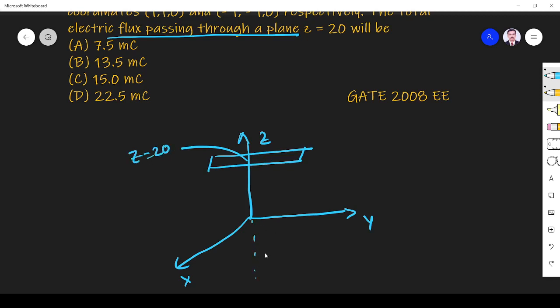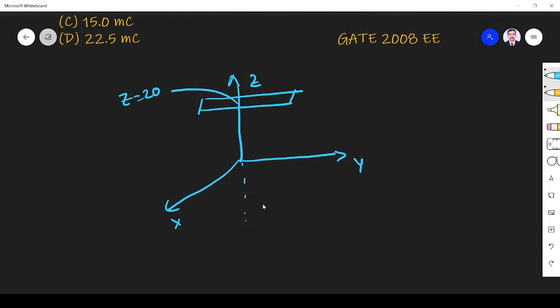Similarly, there will be another plane z equals minus 2. So here it is z equals minus 20.